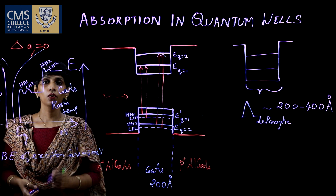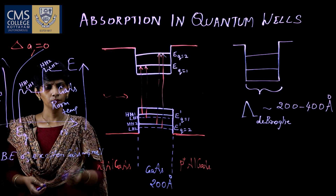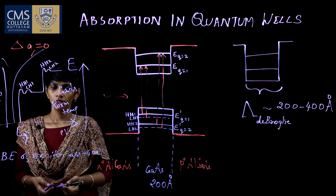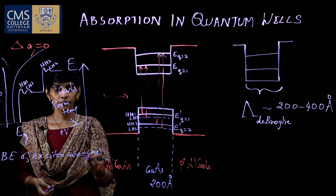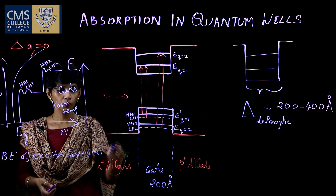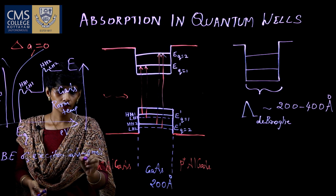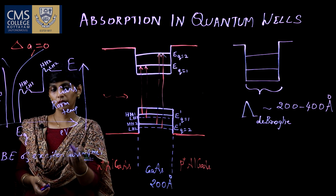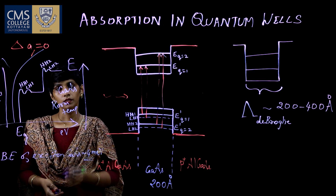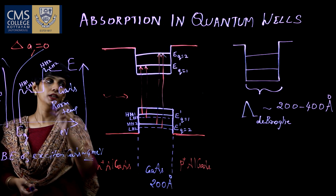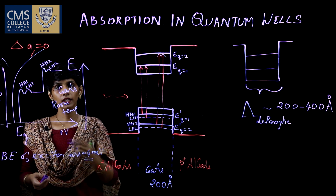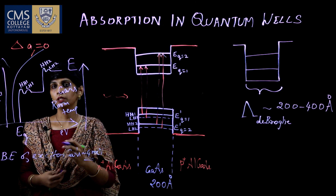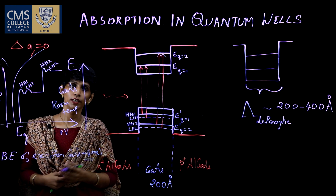But in the case of quantum well structures, we can see excitonic peaks. What happens is that the exciton gets a higher binding energy — about 4 times more binding energy than in bulk gallium arsenide at room temperature. That is why we can see the presence of excitonic peaks in quantum wells. Since we have increased the excitonic binding energy more at room temperature, this property is very useful in optoelectronic devices.